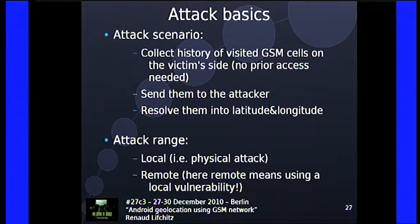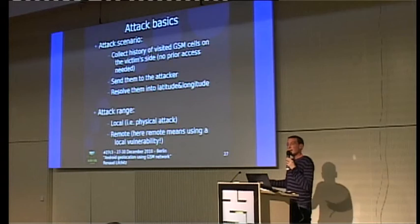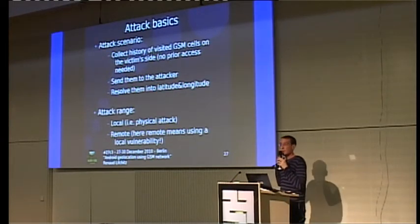The attack scenario: collect the history of visited GSM cells from the victim's phone. You need access to the phone at some point, but not prior — if you access it once you can read history from one, two, or three hours before. Then send this history to the attacker and resolve cell IDs into latitude and longitude to draw on a map where the victim has been.